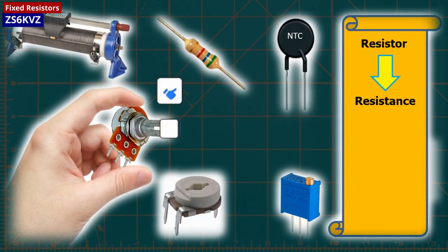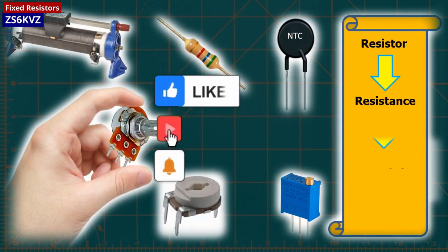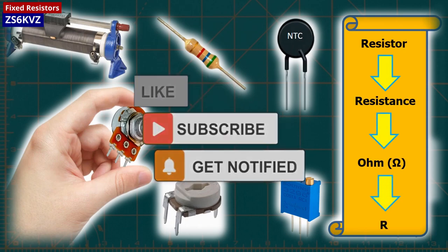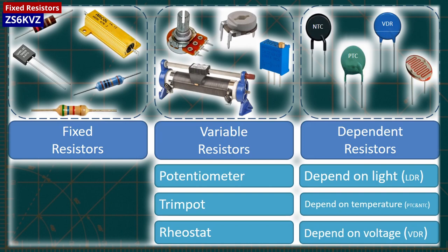The unit of resistance is ohms, and it is represented by the letter R in the circuit. As shown here, resistors can be classified into three groups: fixed resistors, variable resistors, and dependent resistors.